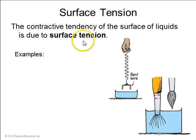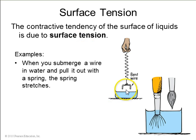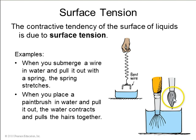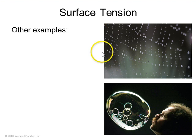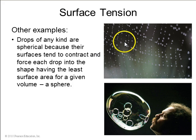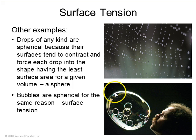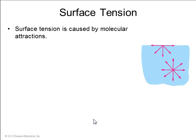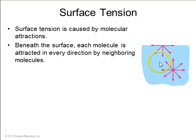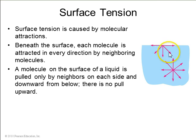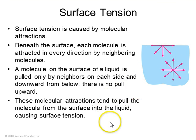Surface tension is the contractive tendency of the surface of liquids. If you submerge a wire in water and pull it out, the spring will stretch just a little more as the wire emerges from the water. If you take a paintbrush and pull it out, the water will contract and pull all the hairs together. Other examples include water droplets, which tend to form a sphere because that's the shape with the least surface area per given volume, and bubbles form the same way. Surface tension is caused by the attraction of molecules in the liquid to each other — beneath the surface every molecule is attracted to all its neighbors and the net force is zero, but at the surface there are no neighbors above, only below, so there's a net pull downwards.